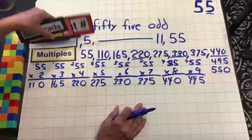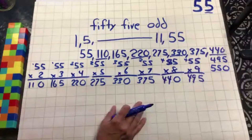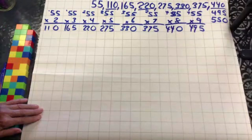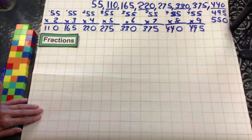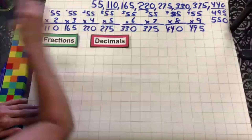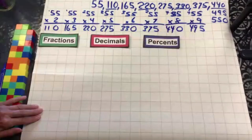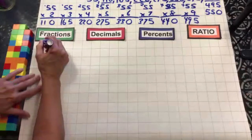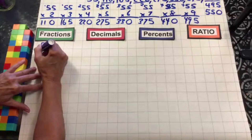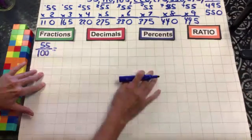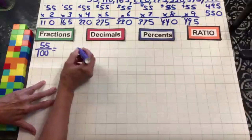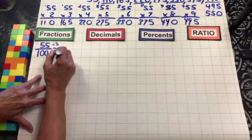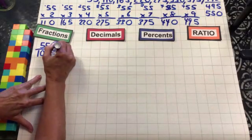Hopefully you're patting yourself on the back! Let's move on to our next category: fractions and decimals. We're going to look at our fraction today as 55 over 100. Out of all the factors of 55, five goes into 100 as well, so we're going to divide the top number by five and divide the bottom number by five.